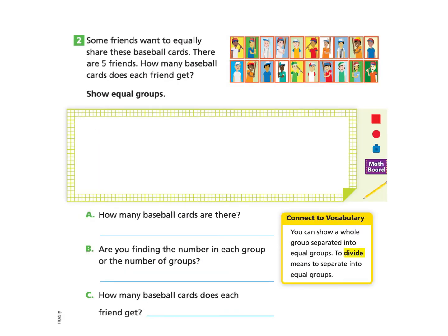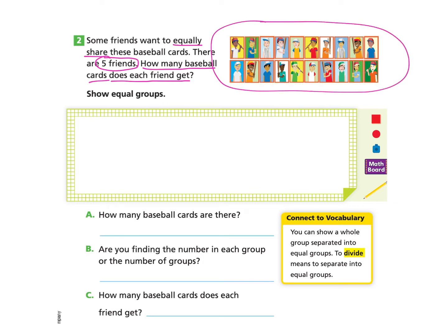Let's take a look at the next page, page 141, Part 2. Some friends want to equally share these baseball cards. There are 5 friends. How many baseball cards does each friend get? Show equal groups. Let's take a look at Part A: How many baseball cards are there? This would be a great time for you to pause and count the number of baseball cards shown. After counting the baseball cards, you should have found that there were 20 baseball cards.